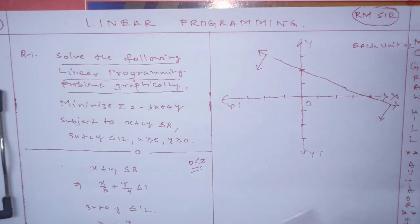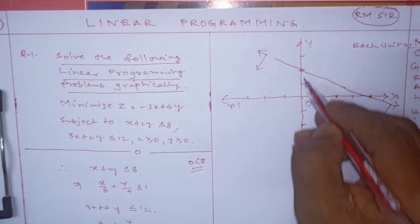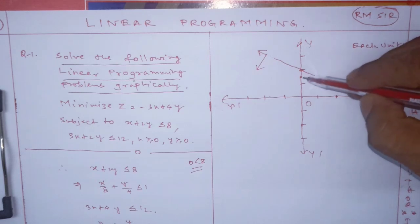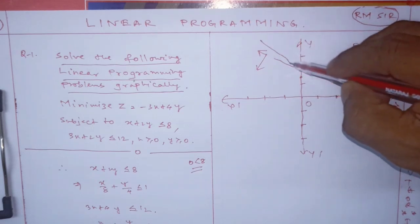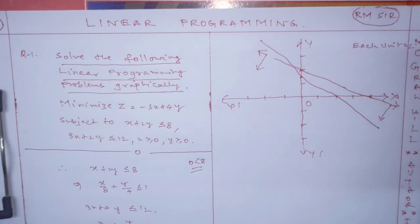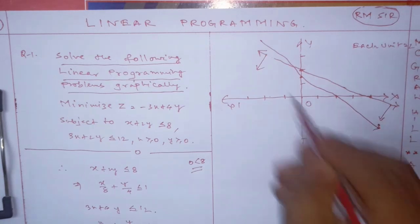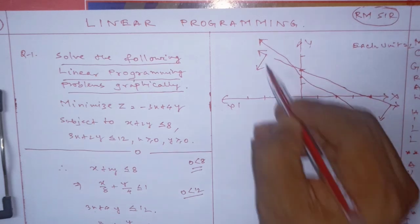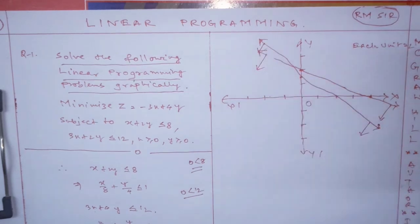Next constraint: x is 4, y is 3. x is 4, y is 3 means this midpoint. So like this, x is 4 and y is 3, like this. Now on this side also put x equals 0, y equals 0. You get 0 is less than 12, the statement is true, so this also toward origin.